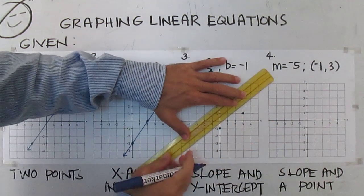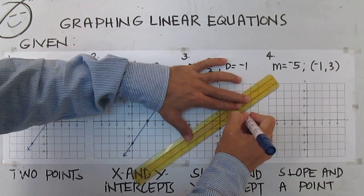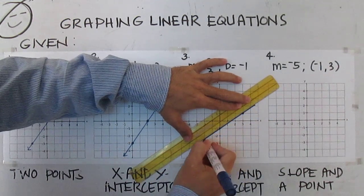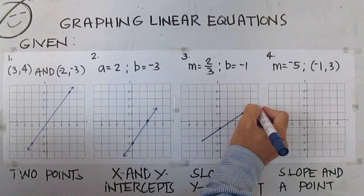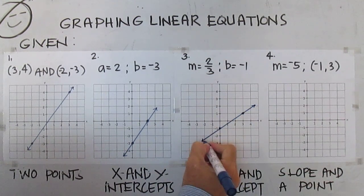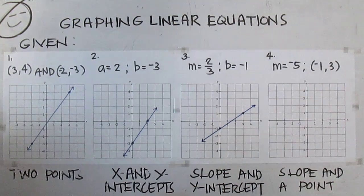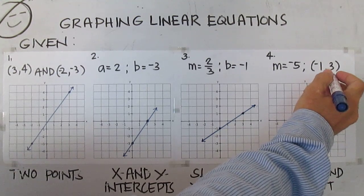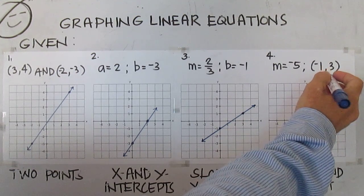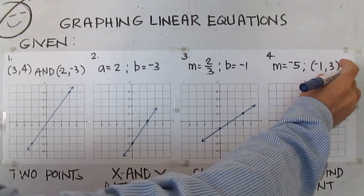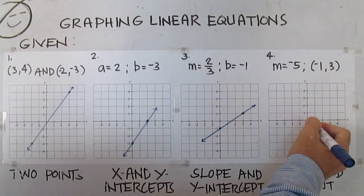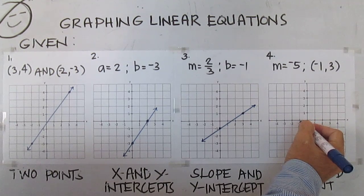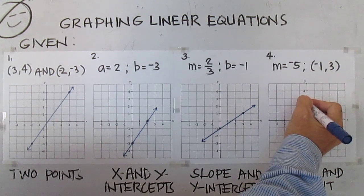Then connect — this is your line. For number four, you have a slope of negative five and a point at (-1, 3). Start with the point: from the origin, move one unit to the left then three units up, and draw a dot.